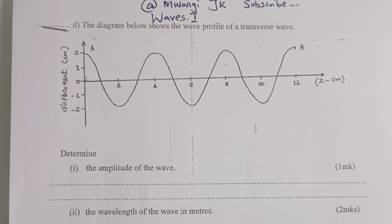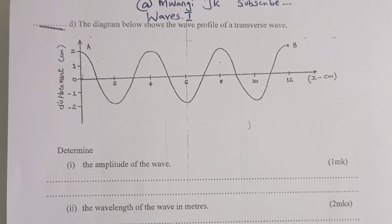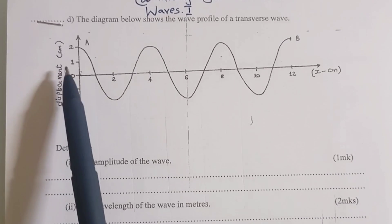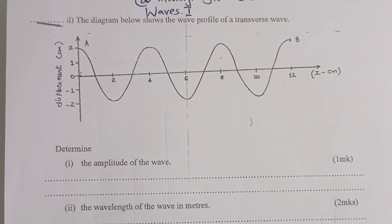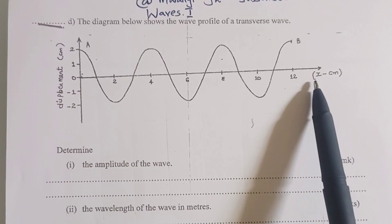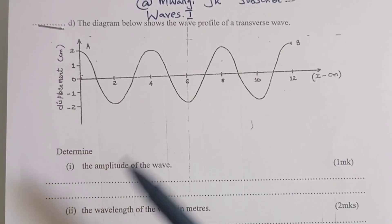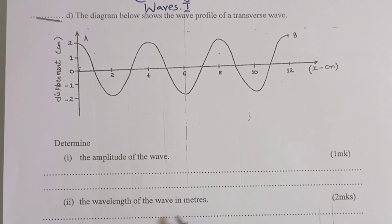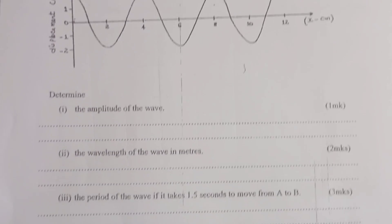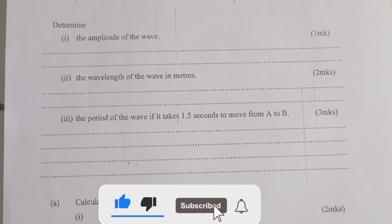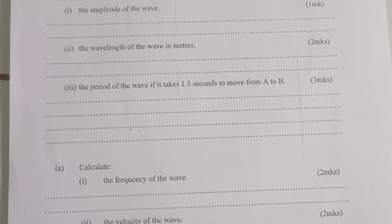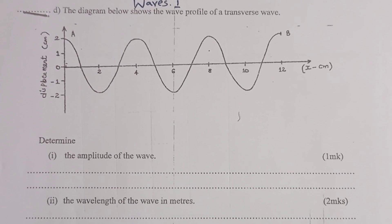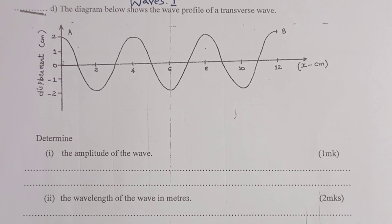For more, you can give me a like or even a comment for a question. So we have the diagram below shows the wave profile of a transverse wave, the displacement on the y-axis and again length on the x-axis. Determine the amplitude of the wave, the wavelength of the wave in meters, the period of the wave, calculate the frequency, calculate the velocity of the wave. But before this, I would like us to go through the topic.